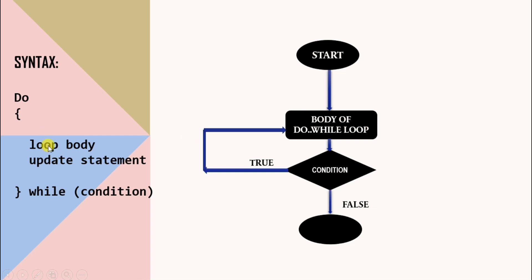Here is the syntax of the do-while loop. We write 'do' and then give the body of the loop, then the update statement, and at the bottom of the loop we give the condition in 'while'. Even if this condition is false, the loop body gets executed at least once.